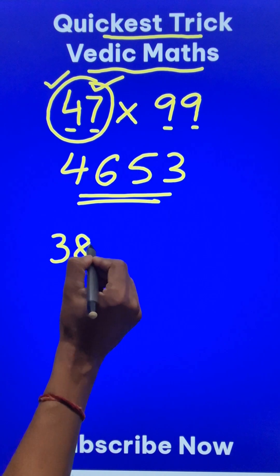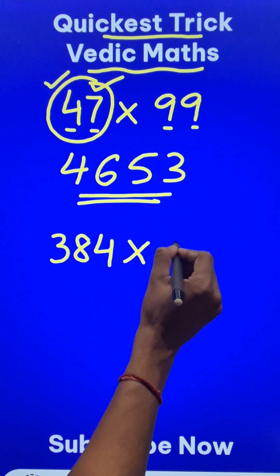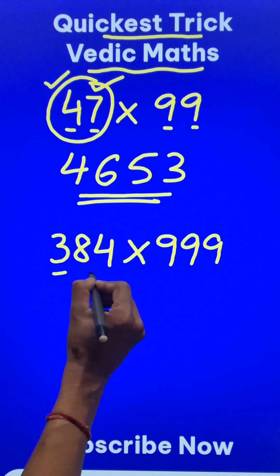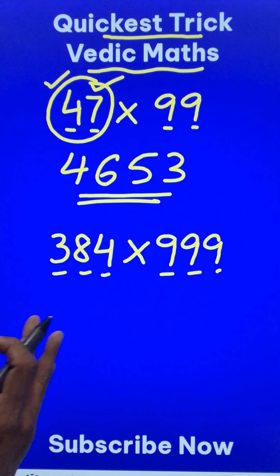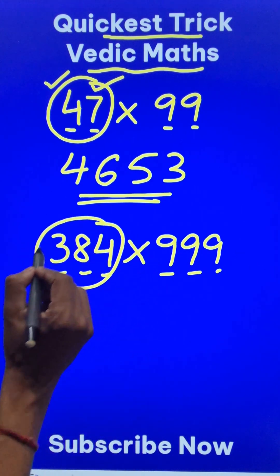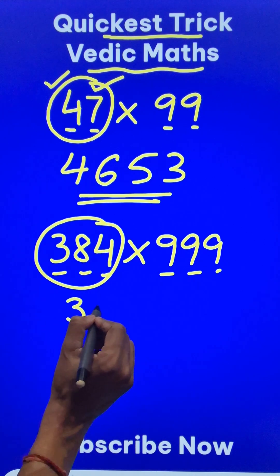Like suppose you have 384 and you need to multiply it by three 9s. So the number of digits here and number of 9s here are equal. Reduce this number by 1. 384 becomes 383.